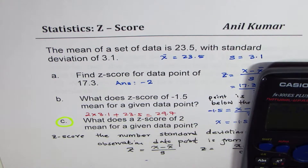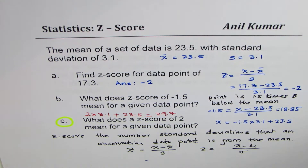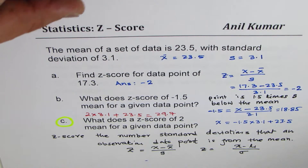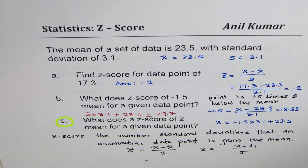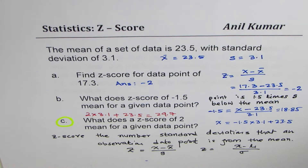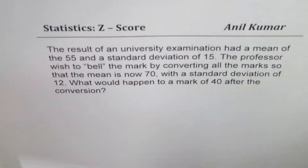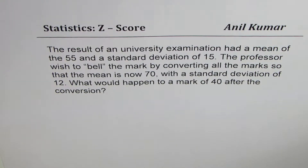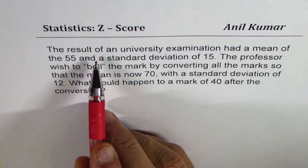I hope you have understood the calculation for z-score and its interpretation. It can be on either side of the mean: if the data point is lower than the mean, we get a negative value; if it is higher than the mean, we get a positive value. Now here is an application question based on z-score.